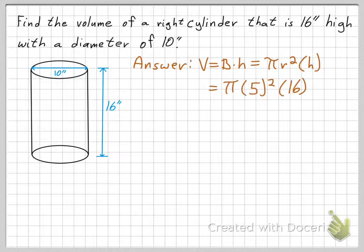So, plugging in values, we get pi times 5 squared times 16, because the height, again, is 16. We substitute that in for the h, that's where we get the 16 from. But where do we get the 5 from?